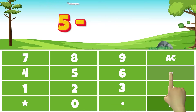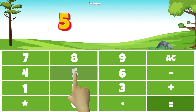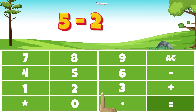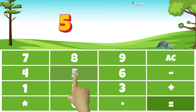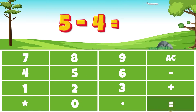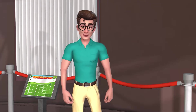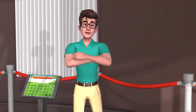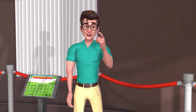Then, five minus one equals four. Five minus two equals three. Five minus three equals two. Five minus four equals one. Is that right, Dr. Bikanachi? Yes, but there is one more fact to be written.